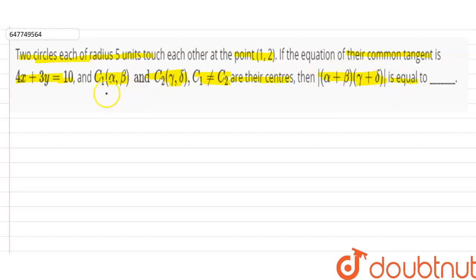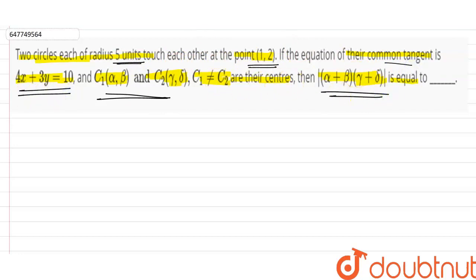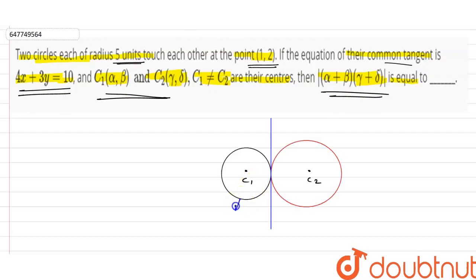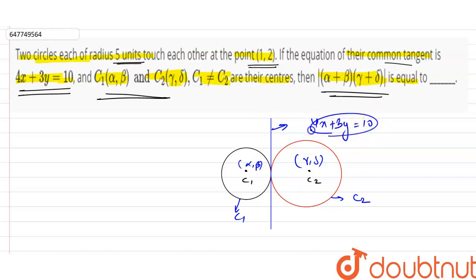C1 and C2 दो circles के centers हैं और दोनों का radius है 5 units। वो दोनों circles point (1, 2) पर एक दूसरे को touch कर रहे हैं और उनकी common tangent की equation है 4x + 3y = 10। पहले हम एक diagram draw कर लेते हैं। Let's say this is circle C1 and इसका center है (α, β), and this is circle C2 and इसका center है (γ, δ)। यह हमें एक line दे रखी है जिसकी equation है 4x + 3y = 10 and यह line दोनों को common tangent है।